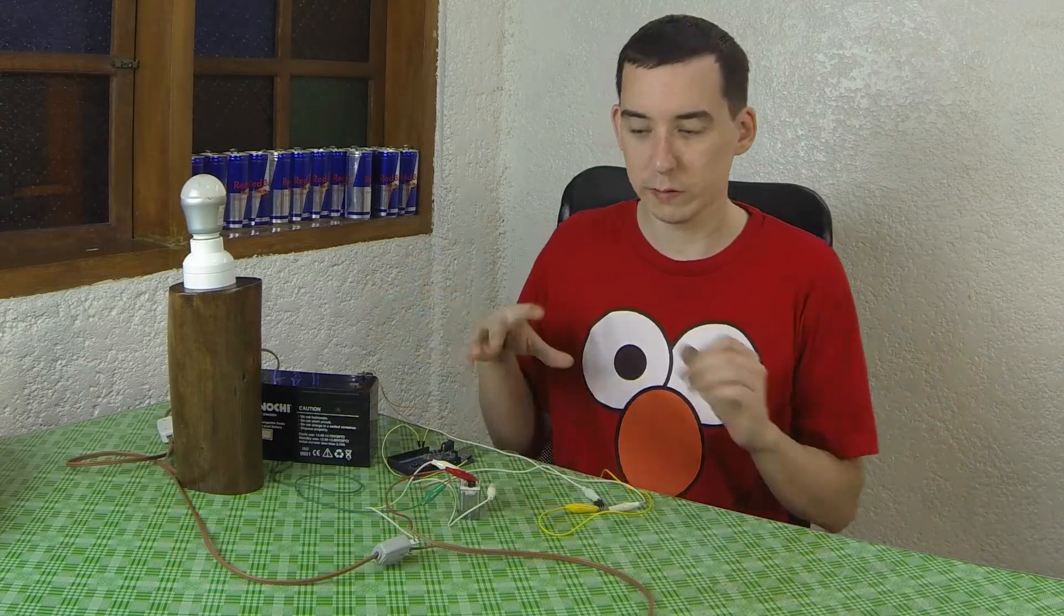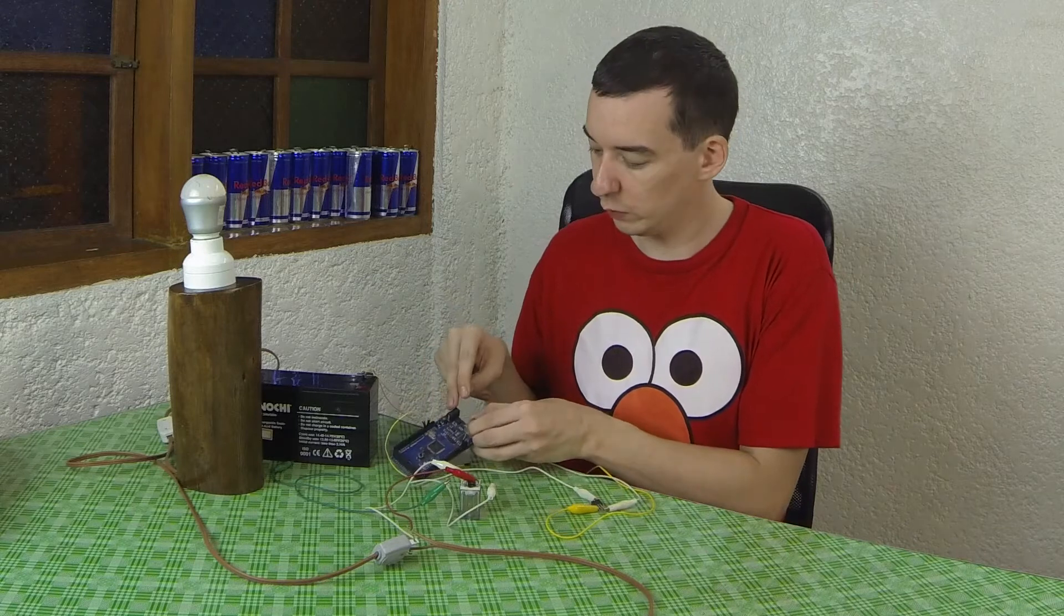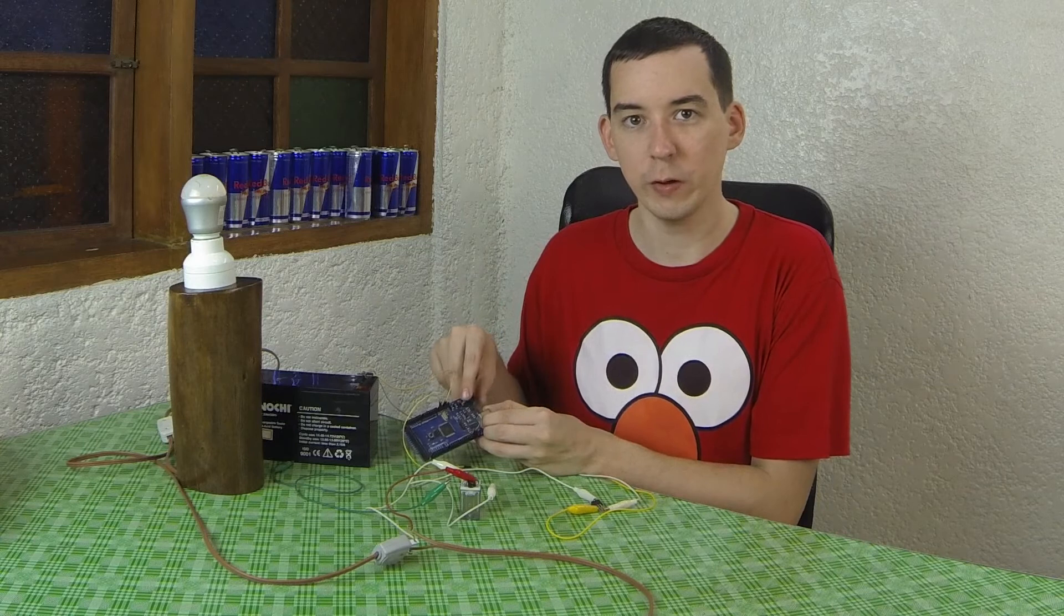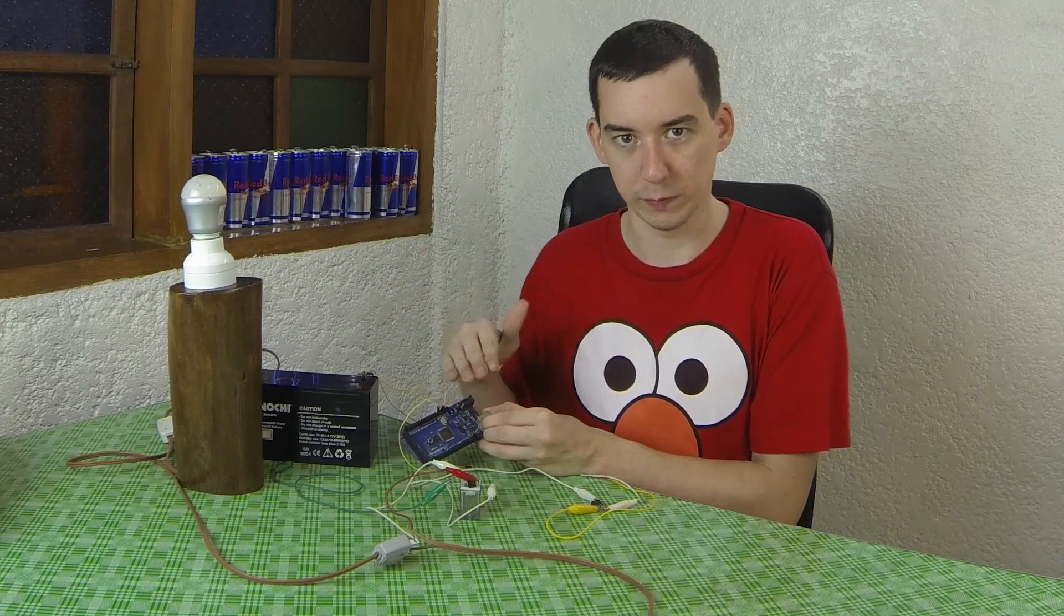So how does all of this work? Well let's start with the Arduino. The Arduino is being run by the 12 volt battery. The Arduino already has a voltage regulator on board which drops the 12 volts down to 5 volts.